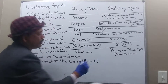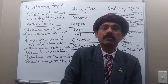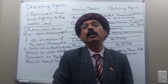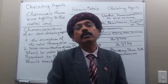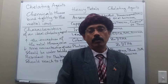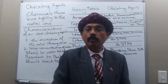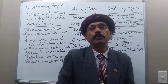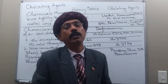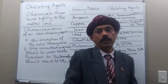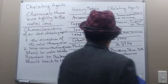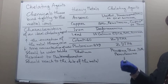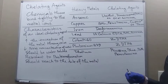Some metals may be in certain sites for years, even decades. For example, lead may be deposited in the upper end of long bones, especially the femoral and tibia, for decades — maybe 10 or 20 years. So the chelating agent should go there and pick it up, reaching the site whether the metal is in bone or elsewhere.